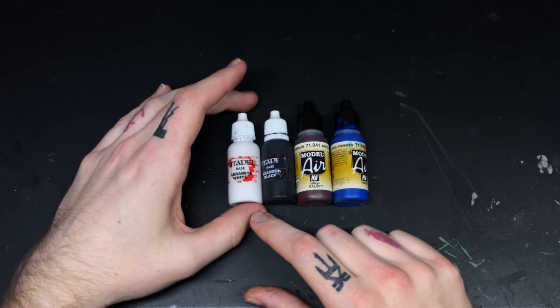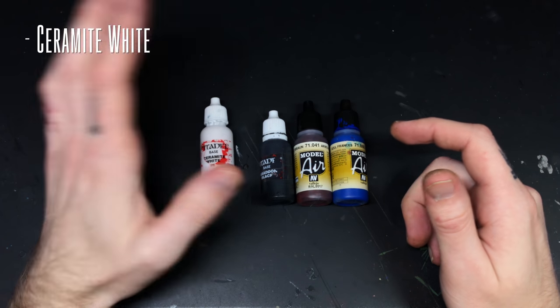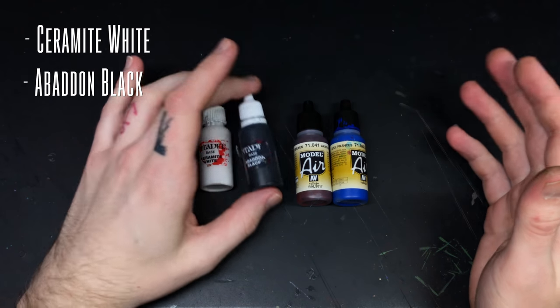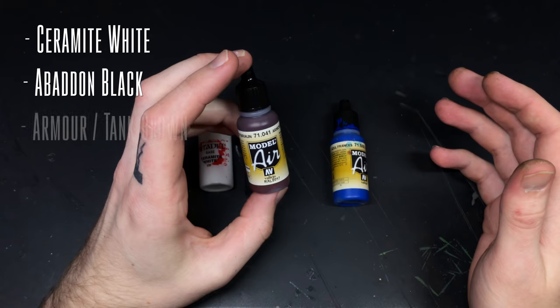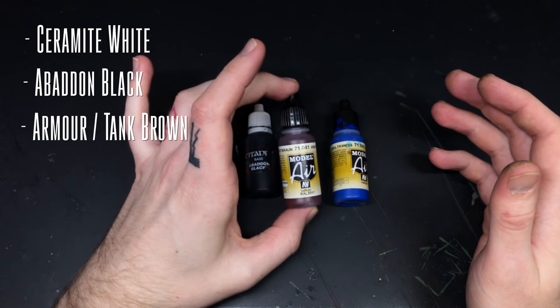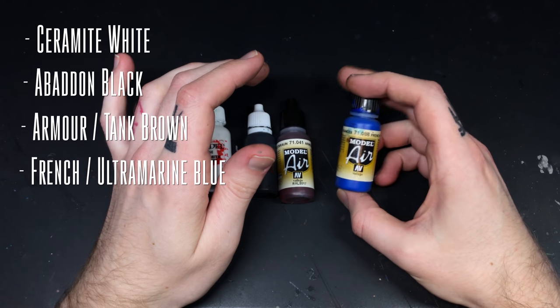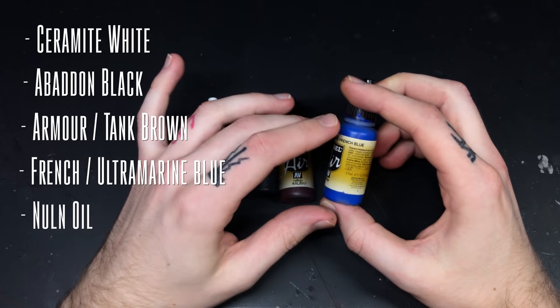The palette we're using this time consists of four colors. Ceramite White from Citadel, you can use almost any white. Abaddon Black from Citadel, you can also use almost any black here. Armor Brown from Vallejo Model Air. We're going to use French Blue from Vallejo Model Air. And lastly, we have Nuln Oil, which is optional to use. You don't have to use it to achieve a good result, but it can help you in a very tiny way.